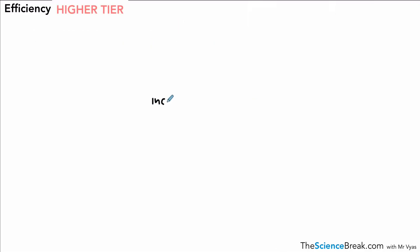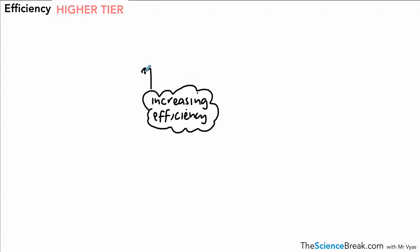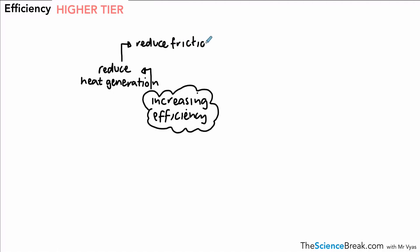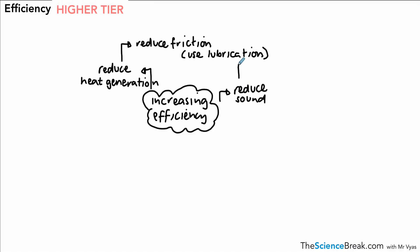The last thing I want to cover is how we can increase the efficiency of different systems or machines. The first way is to reduce the heating effect from any moving parts — so reduce heat generation. One way to do that is by reducing friction, which is a force that causes the generation of heat. This can be done using a lubricant — sometimes oil, sometimes grease — which reduces friction and reduces the amount of heat generated. A second way is to reduce sound, which can also be achieved using lubrication so rubbing parts don't make as much sound.